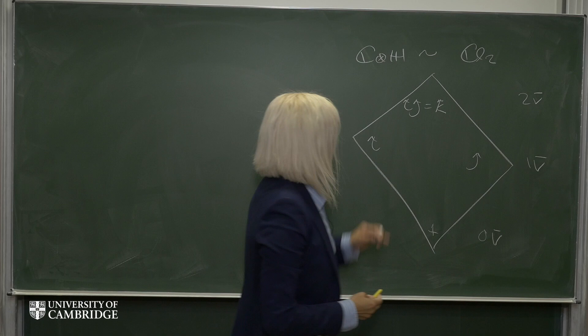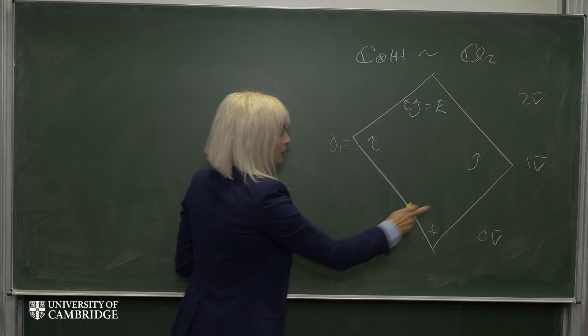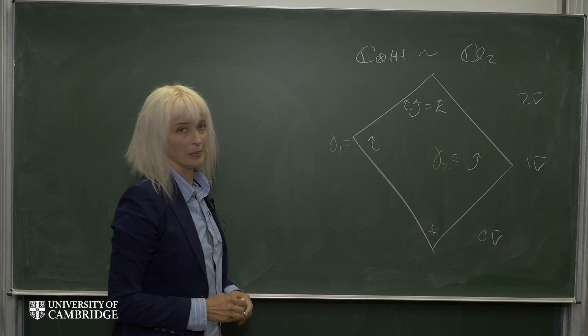You can see that this is a Clifford Algebra, in the sense that if I were to relabel this as gamma 1, and this one as gamma 2, then under anticommutation, we see that we have this relation.